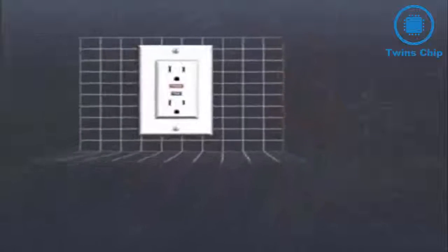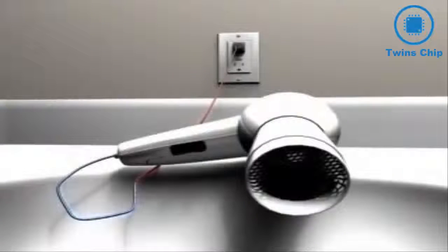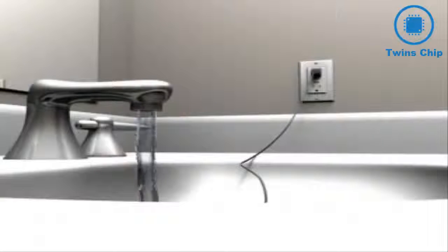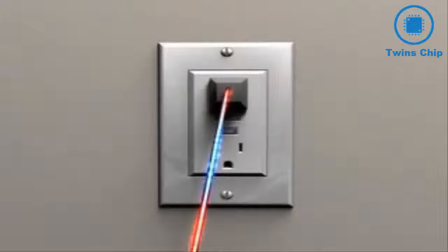For example, when you plug in an appliance like a hair dryer, energy flows from the outlet to the device. A GFCI monitors that amount of electricity. If there's any leakage or interruption of that current, such as when the hair dryer comes in contact with water, the GFCI cuts power to the device in as quickly as one-thirtieth of a second, before a deadly shock can occur.